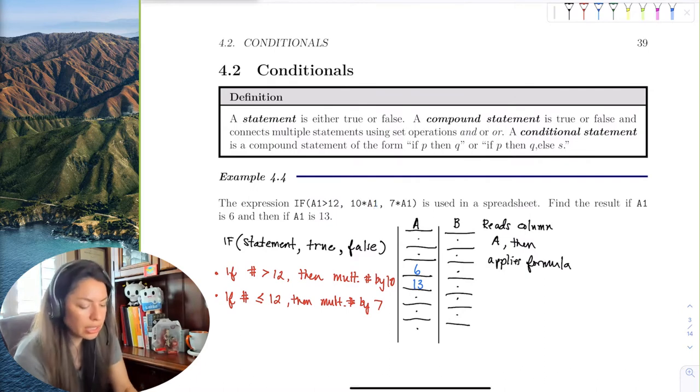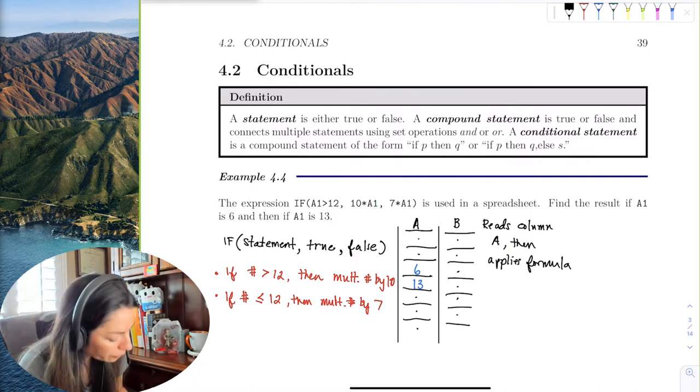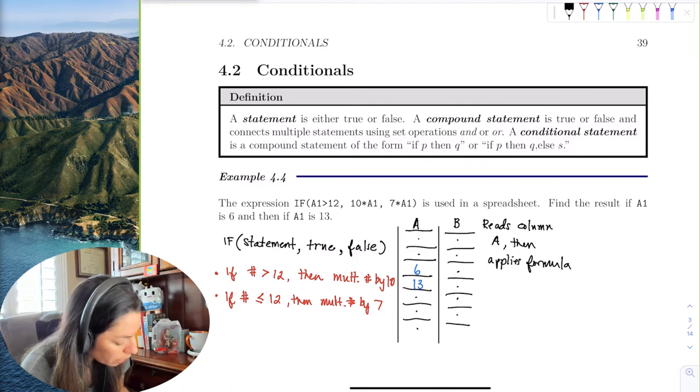So essentially this is going to be the condition, and then this is going to be where the condition is true, and then when the condition is false.